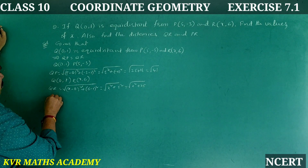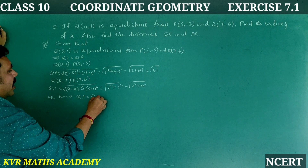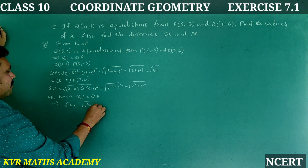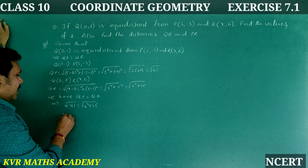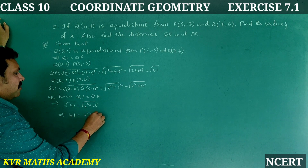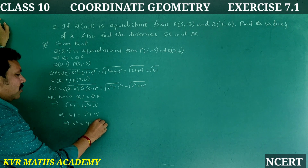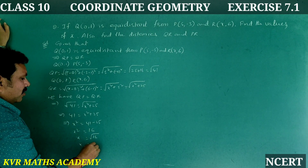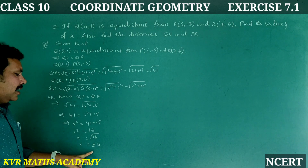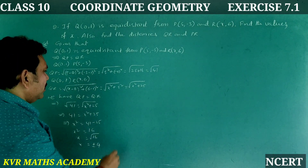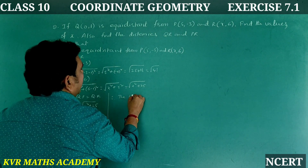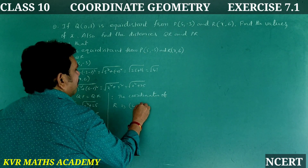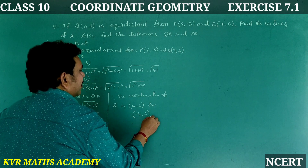We have QP = QR. Therefore √41 = √(x² + 25). Squaring both sides: 41 = x² + 25, so x² = 41 − 25 = 16, giving x = ±4. Therefore the coordinates of R are (4, 6) or (−4, 6).